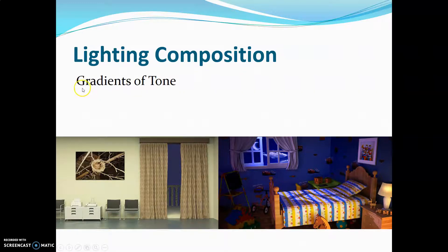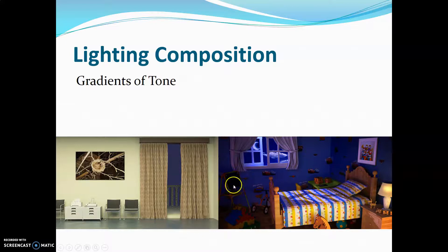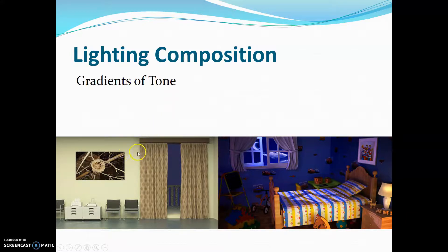This technique is called 'gradients of tone.' Comparing the picture on the left to the one on the right, the right has more interesting color — a gradient changing very subtly from blue on the outside to yellow, with a nice blend in the middle. The left picture is considered flat lighting: just one color, no depth, very boring — something you'd see in an IKEA brochure. The right is what you want for a film project.